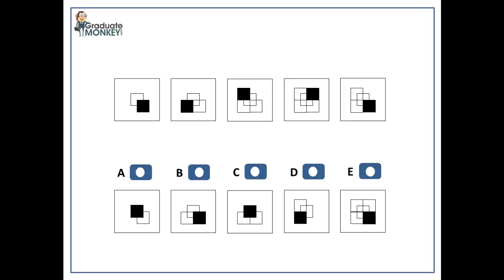In this series, the pattern is formed by a black square producing increasing numbers of white squares. Specifically, the black square moves clockwise one step at a time from one pattern to another, creates one square and leaves it behind. For example, in the second pattern, the black square moves one step clockwise and leaves one white square in its current place.